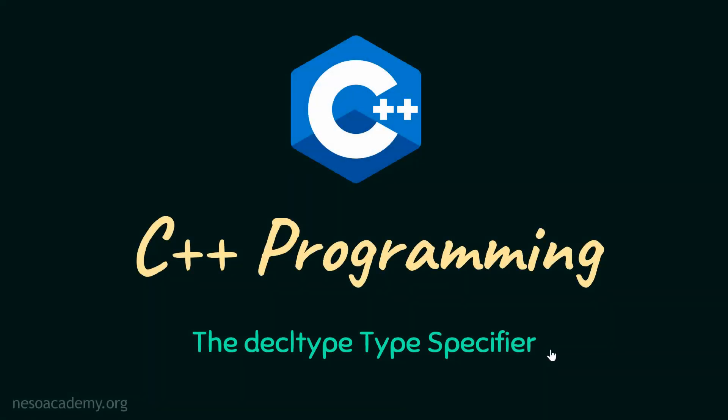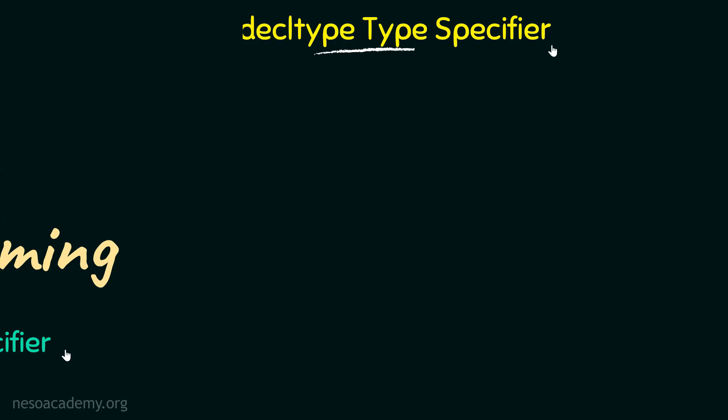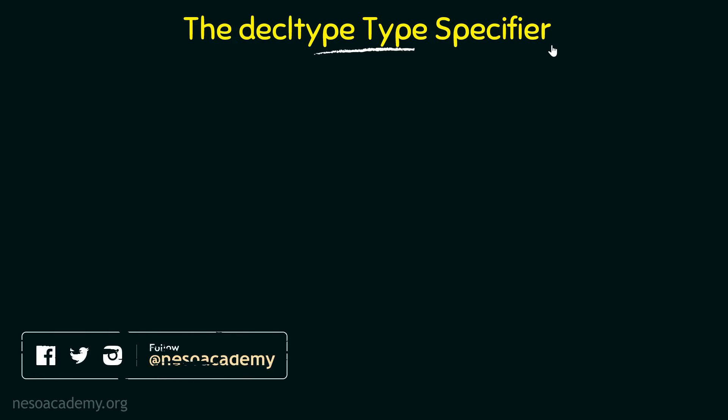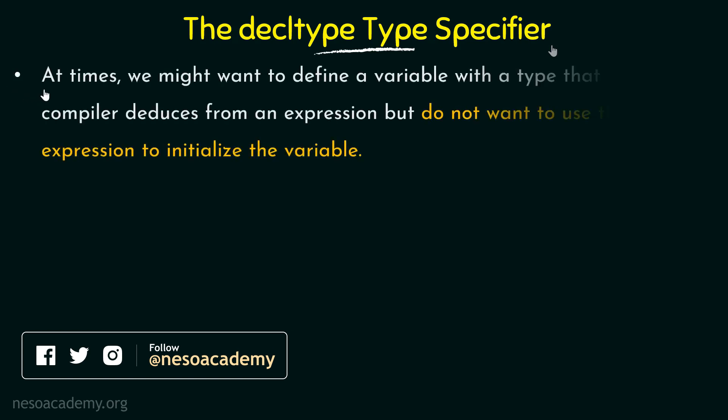In this video, we will discuss the decltype type specifier. In the previous lectures we have been looking at the auto type specifier and we have seen how it works. Now we will look at the decltype type specifier which has some similarities with the auto type specifier, but at the same time it is also quite a different one.